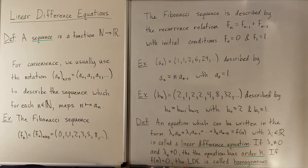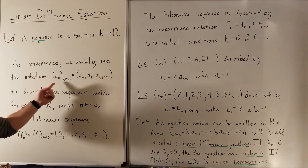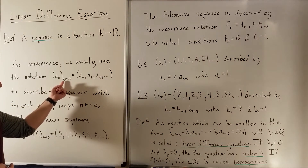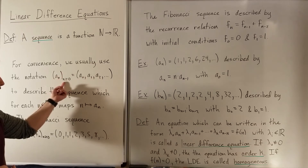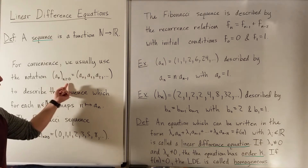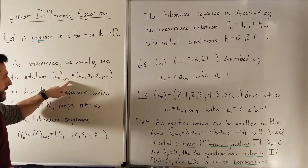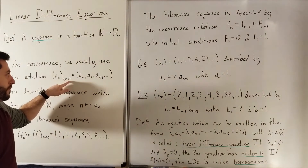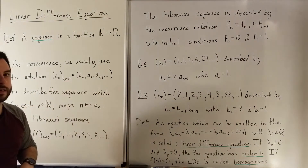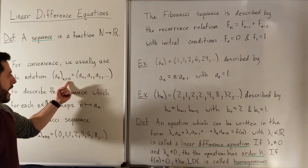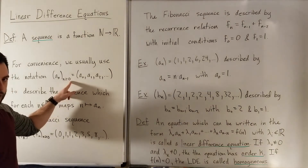The way we normally describe a sequence — the notation that we use — looks like this. We have parentheses with a_sub_n in the middle, and then this subscript down here, outside of the parentheses, is letting us know the range of n values that we're using. By default, it will be the natural numbers, but sometimes we want to leave off some of the first few — maybe we want to start our sequence at n equals 3. In general, I will not be writing this subscript because pretty much all of our sequences will be starting at 0.